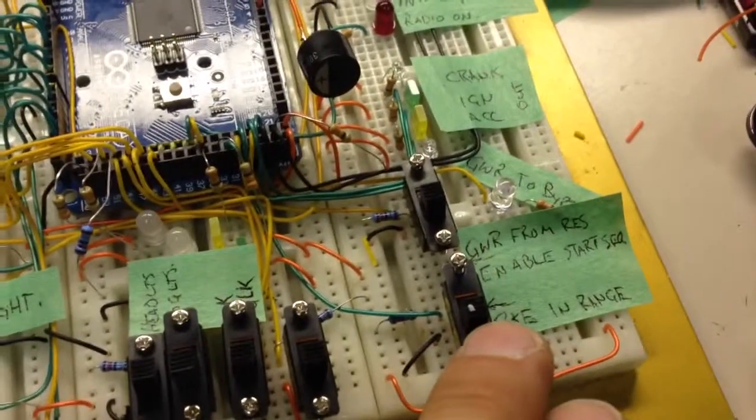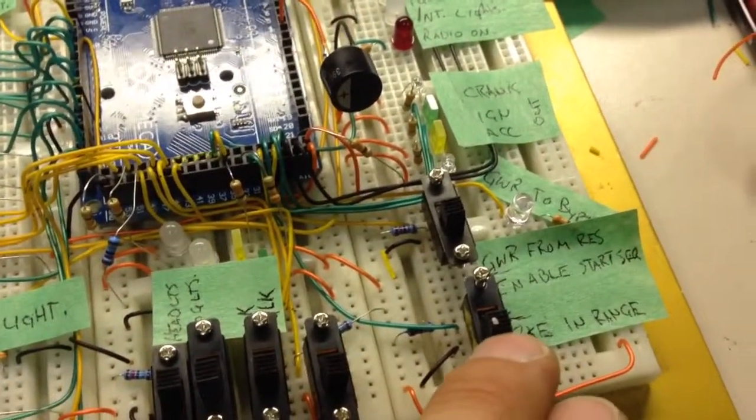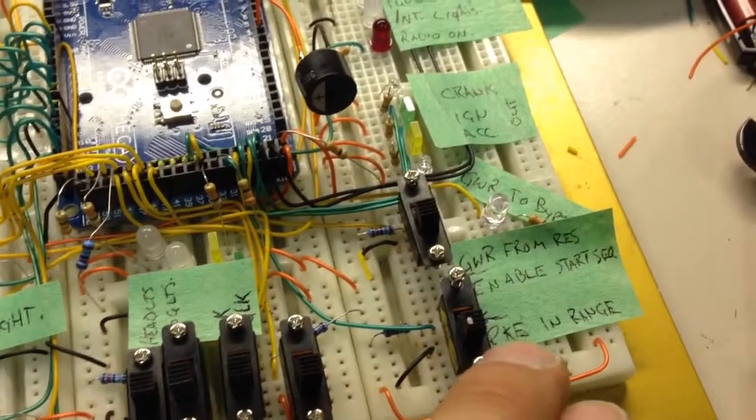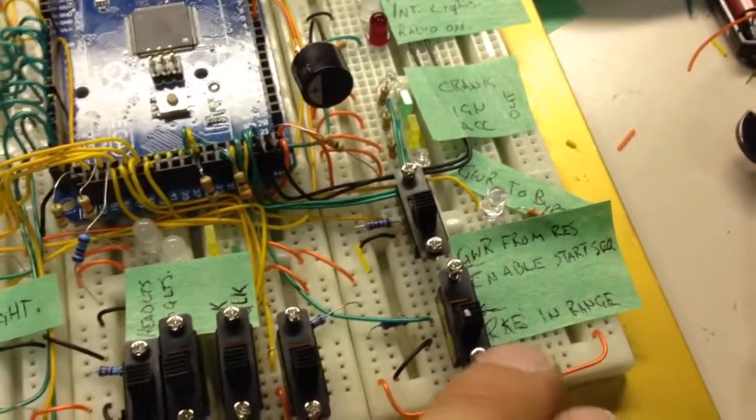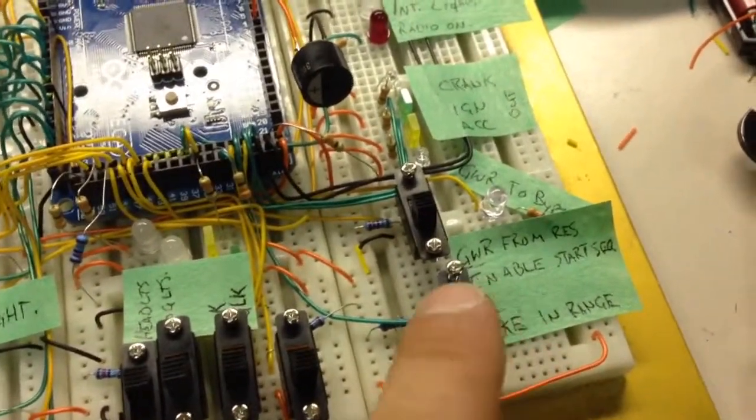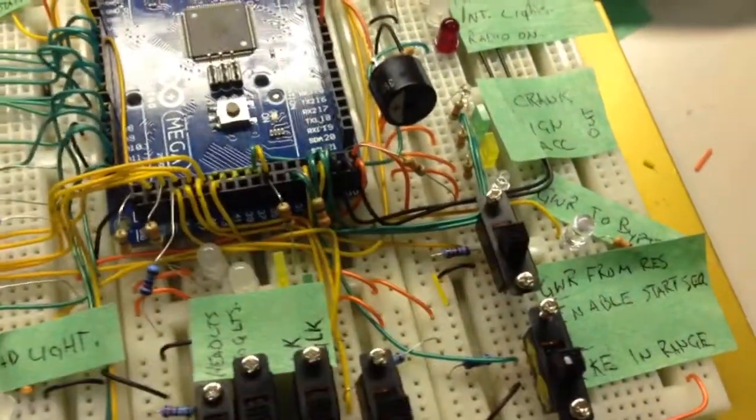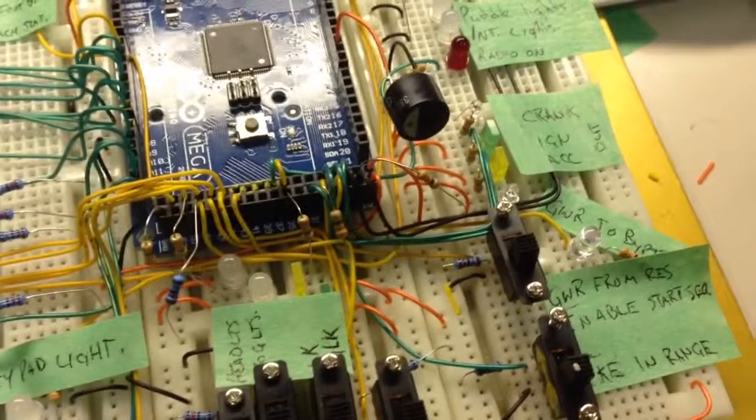And then also we have some other things. We're converting the car obviously to push-button start, so we need to have a remote keyless entry fob that is going to come into range, so this will simulate that. And also we have an output for our bypass modules and whatnot.